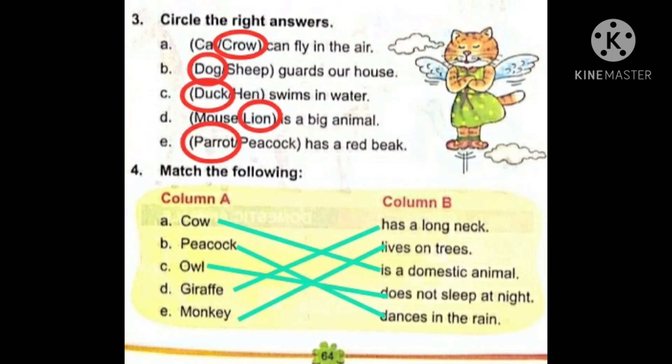Now question number four is: match the following. Cow — kaisi animal hai? Cow humare aas paas hoti hai, so cow is a domestic animal. Gaay ek paltu janvar hai, so we will match cow with 'is a domestic animal.' Peacock — moor jo hota hai, it dances in the rain. Woh baarish hone pe dance karne lagta hai. So we will match: peacock dances in the rain.